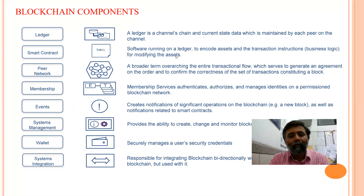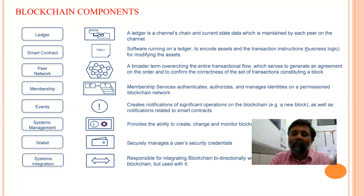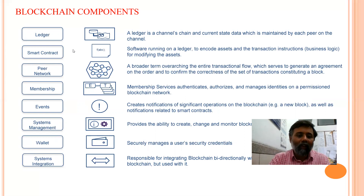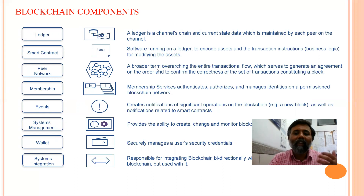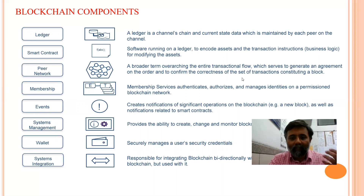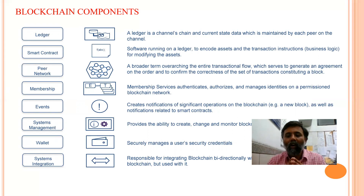A smart contract is a piece of code responsible for encoding the asset and the transaction instructions — it is a kind of business logic running on the blockchain. The peer network consists of all peers connected with each other, and collectively they work to find consensus, to confirm the correctness of particular transactions, and to constitute those transactions in the form of a block added to the network.